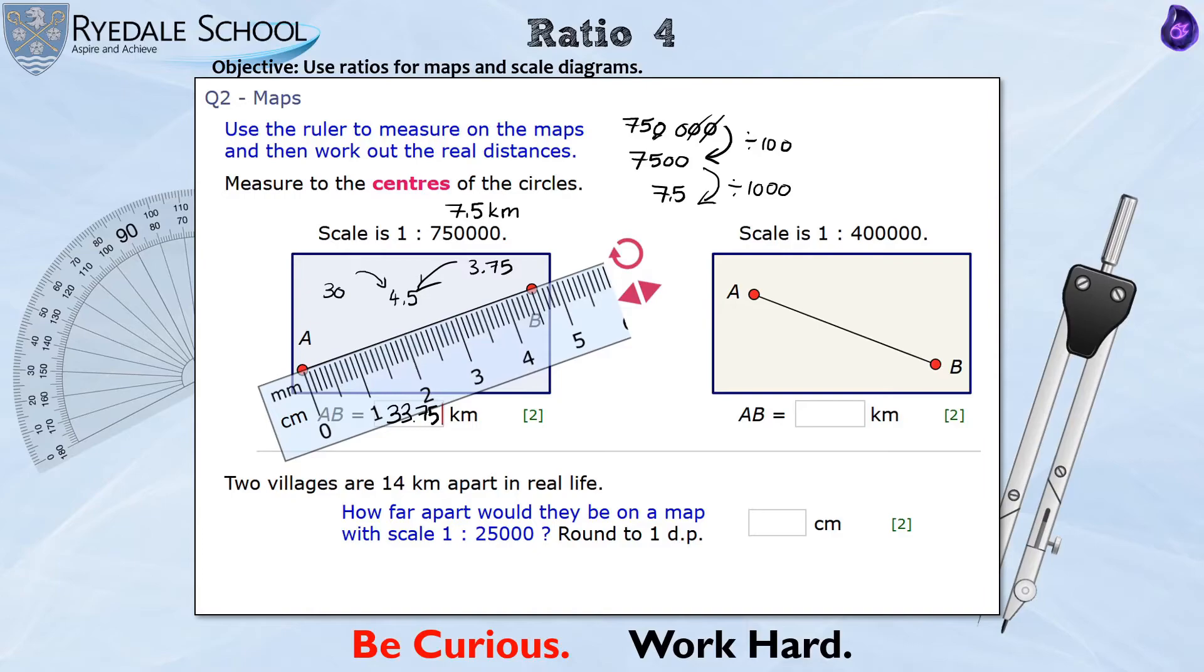Now I've measured my second one off screen and this one is 3.6 centimetres. So again, I'm going to explore this ratio in a similar way. If this was 1 centimetre in real life was 7.5 kilometres, looking at the size of this number, this must be 1 centimetre is 4 kilometres. So all I need to do is take my measurement and times it by 4 and 3.6 times 4 is 14.4.